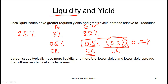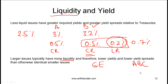Generally, larger issues typically have more liquidity and therefore lower yields and lower yield spreads than smaller issues. If you have a large company like GE with a huge issue of corporate bonds, liquidity will be good and the spread will be lower. In contrast, a small company called ABC with a good credit rating but a relatively small bond issue would have lower liquidity — so even though the credit risk is the same, the yield on those bonds would be slightly higher.